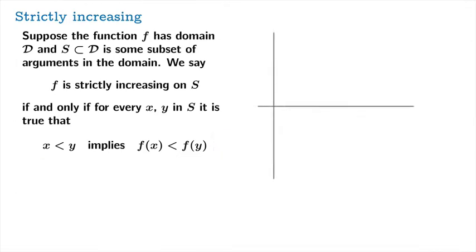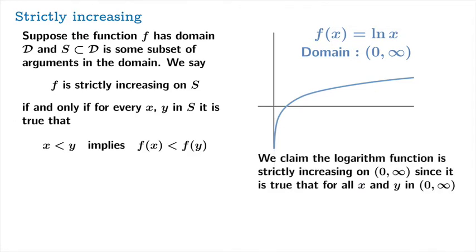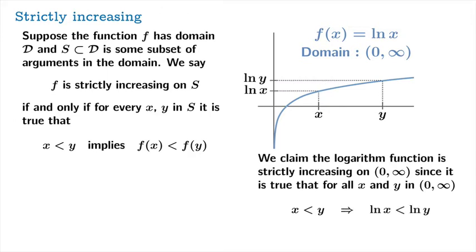Let's look at an example. Here is the logarithm function, and its domain is the open interval from 0 to infinity. In this example, we're going to let s be the entire domain. We claim the logarithm function is strictly increasing on (0, ∞), since it is true that for all x and y in this set, whenever x is less than y, ln of x is less than ln of y. So this definition is satisfied: x < y implies ln(x) < ln(y), and this is true for all x and y chosen from the open interval from 0 to infinity.